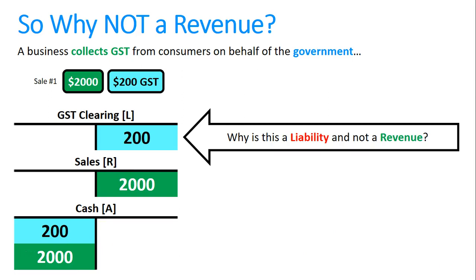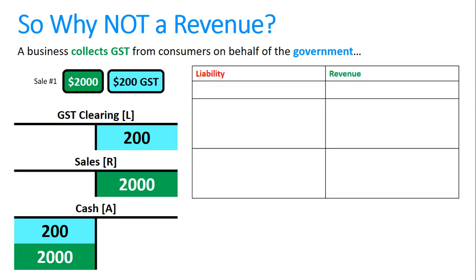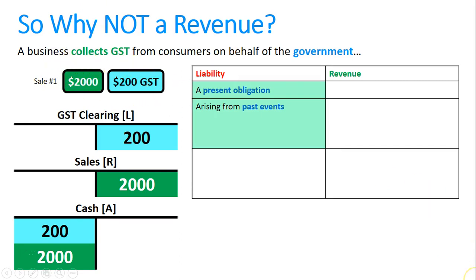Every element of accounting — asset, liability, revenue, expense, or owners equity — has a definition. Applying the liability definition to this two hundred dollars GST: first, it must be a present obligation — yes, it's an obligation to pay the government. Second, it must arise from past events or transactions — yes, we made a sale of two thousand dollars plus GST. Third, will it result in an outflow of economic benefits in the future? Yes, the business will have to pay the government to settle that GST liability. So it meets all three criteria of a liability.